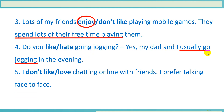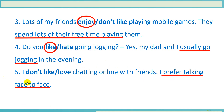Number four: we have 'I usually go hiking.' The correct word is like. Do you like going hiking? Yes, my dad and I usually go hiking in the evening. Number five: we have 'I prefer talking face to face,' so the correct word is don't like. I don't like texting online with friends. I prefer talking face to face.